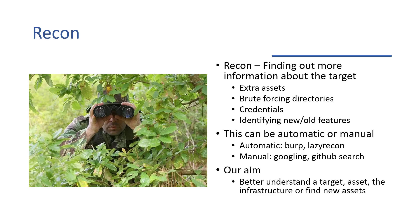What kind of stuff does recon include? We have extra assets — assets that don't necessarily appear on the scope list. They could be out-of-scope assets or not, depending on the program rules. We can brute-force directories, especially useful in something like an API when you're trying to find more resources — you can get giant lists of API endpoints and just run that on your target. We can find credentials, though you really have to exploit them to report them because they could be old. We have identifying new or old features — new features might have less testing, and old features might have had less security applied during development.